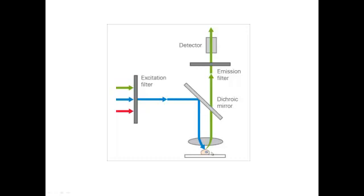For example, GFP or green fluorescent protein will absorb a specific wavelength, get excited, and then emit a specific higher wavelength. This light gets reflected back to the dichroic mirror and passes through to the emission filter. The light emitted at a higher wavelength reaches the detector, helping to visualize the molecule of interest already stained by fluorophores using specific antibodies or proteins through different staining methods.